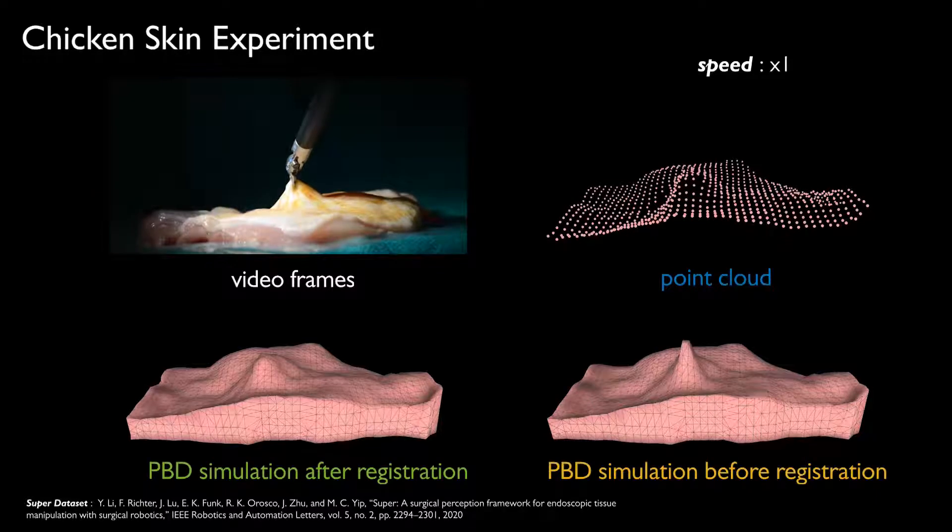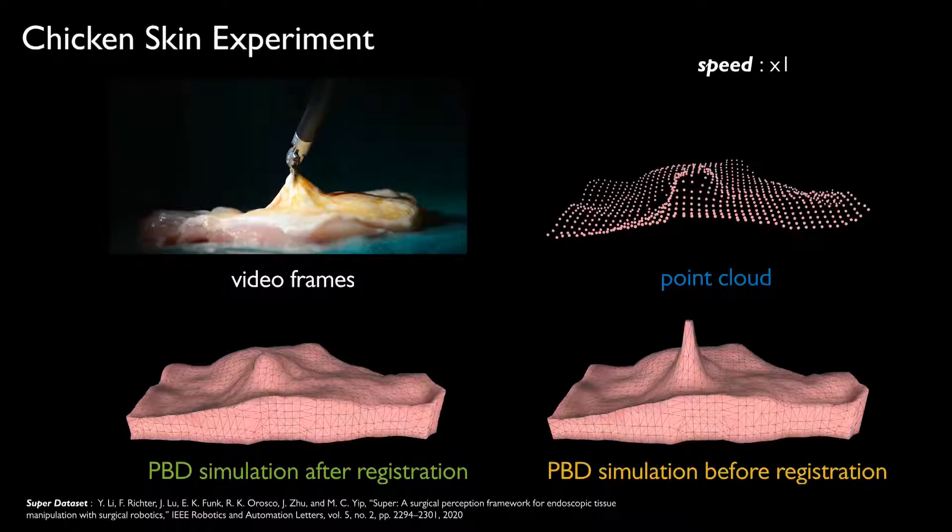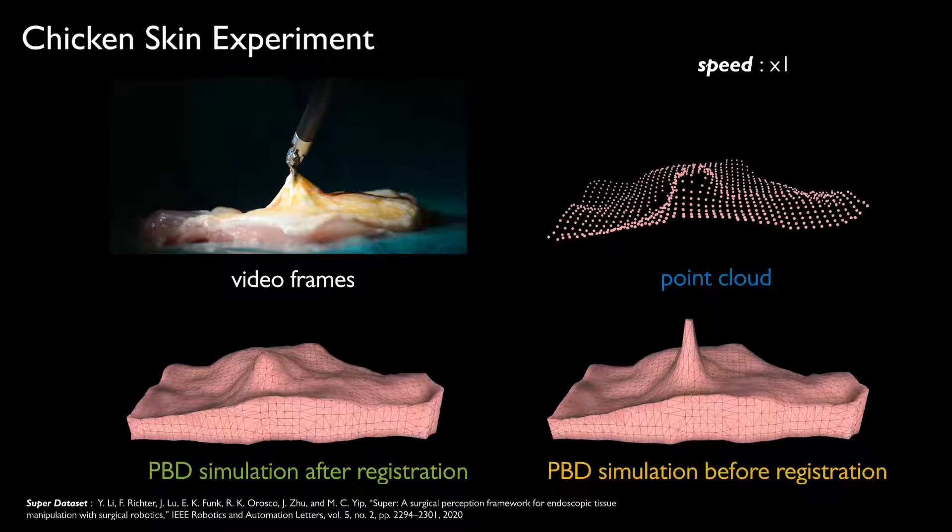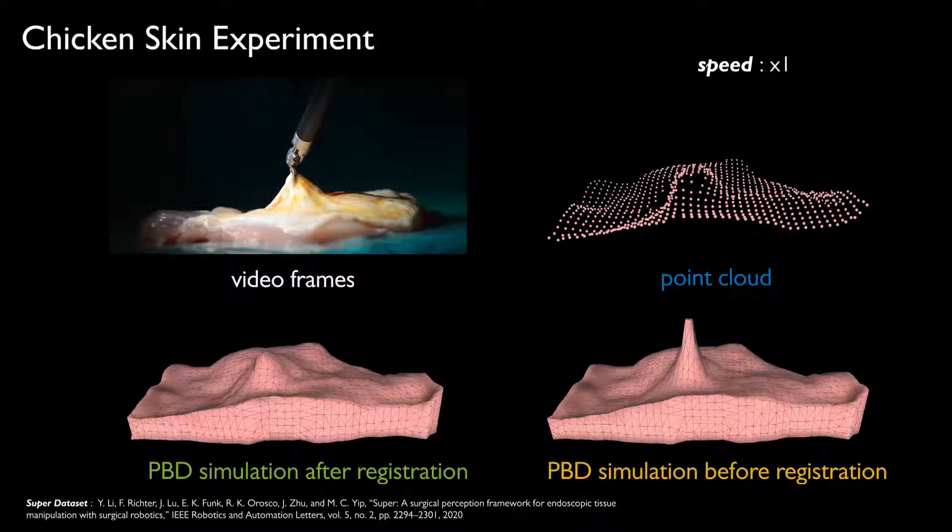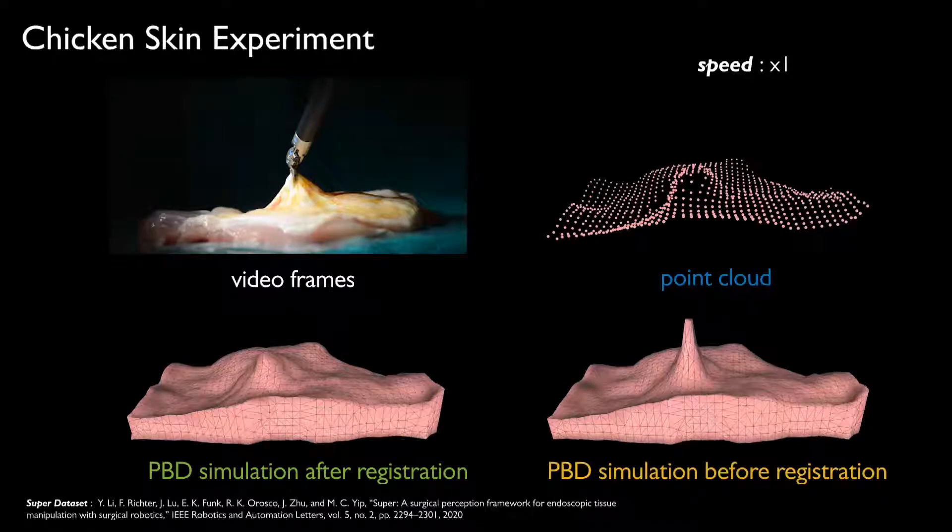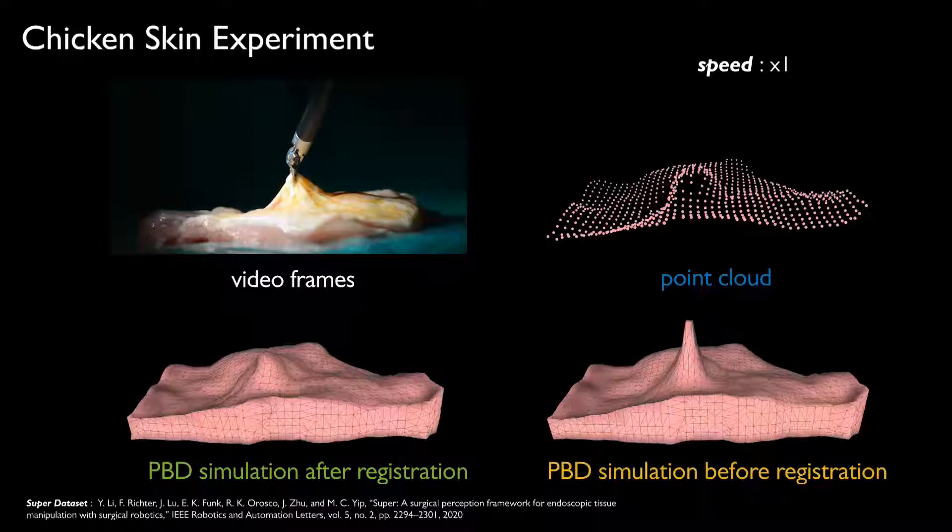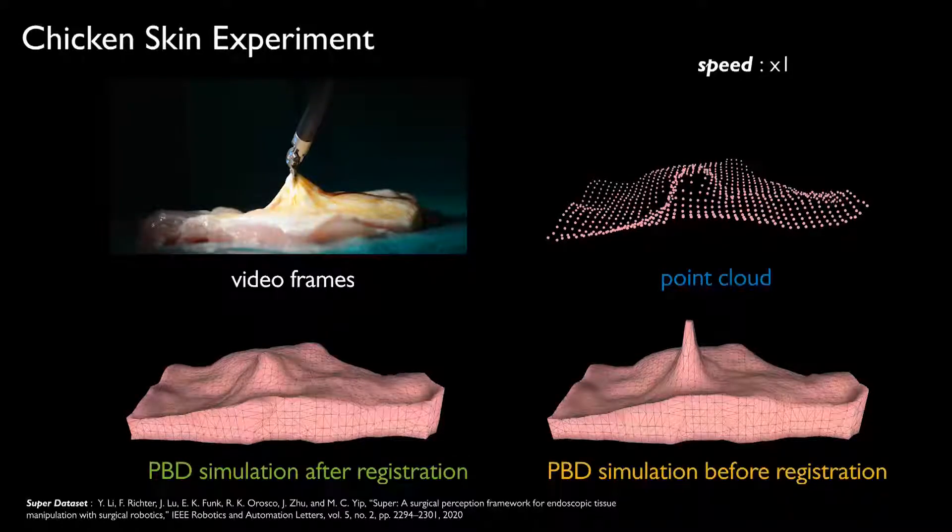We use the reconstructed point cloud data to build the simulation of position-based dynamics for the tissue. The volume of the mesh is extended along the gravity direction with the pre-knowing thickness of the tissue. The dynamics are represented by the movement of the particles located on each mesh vertex.